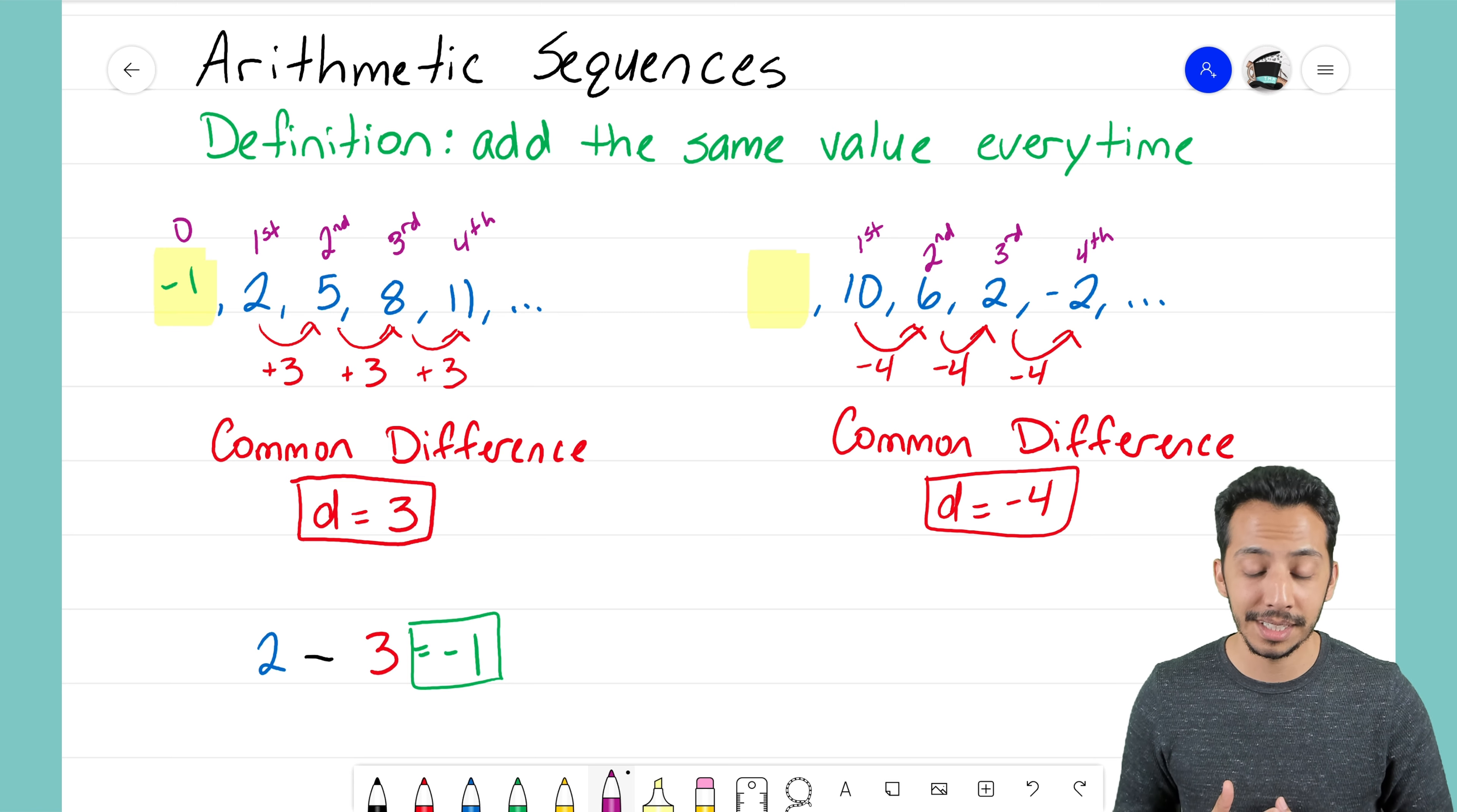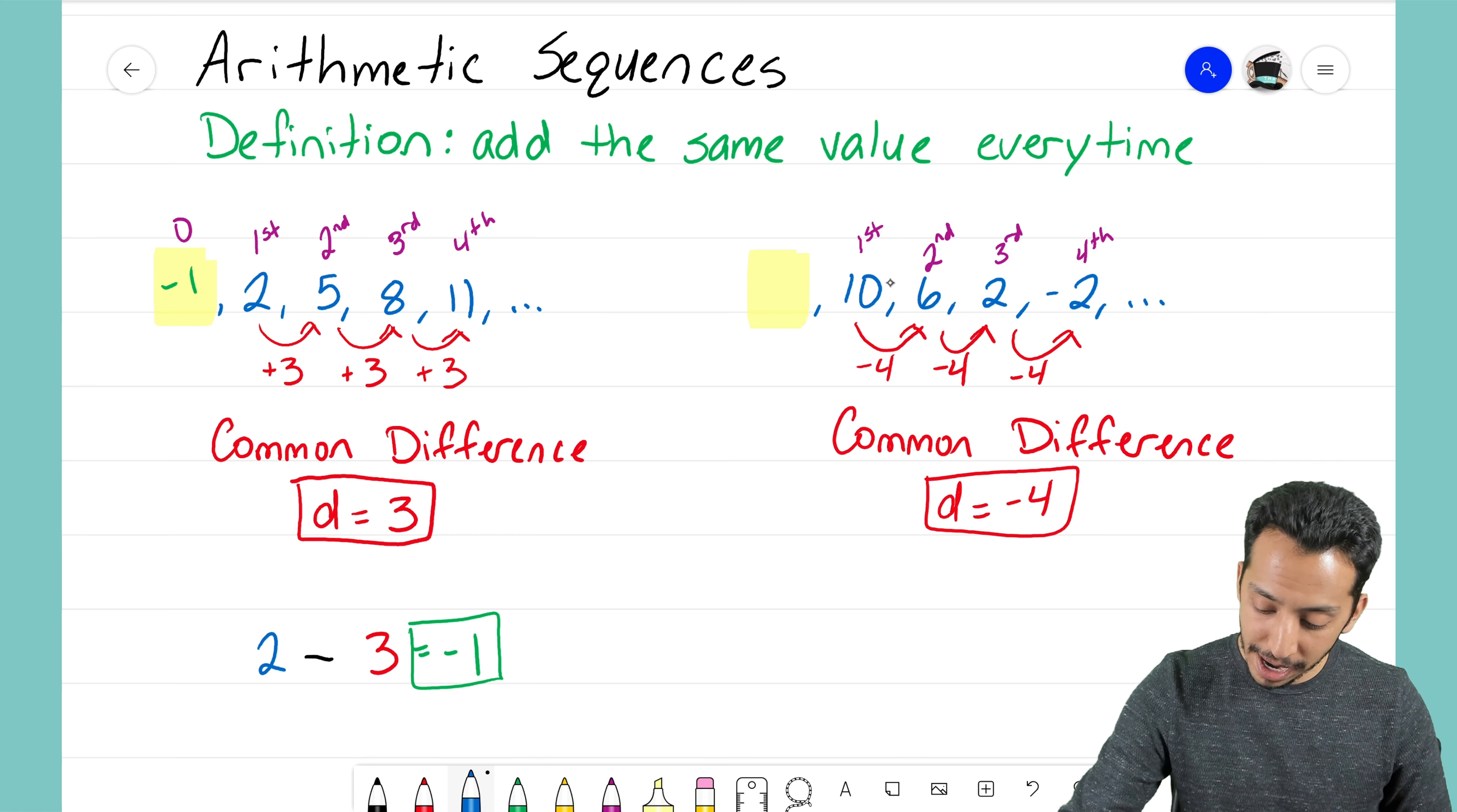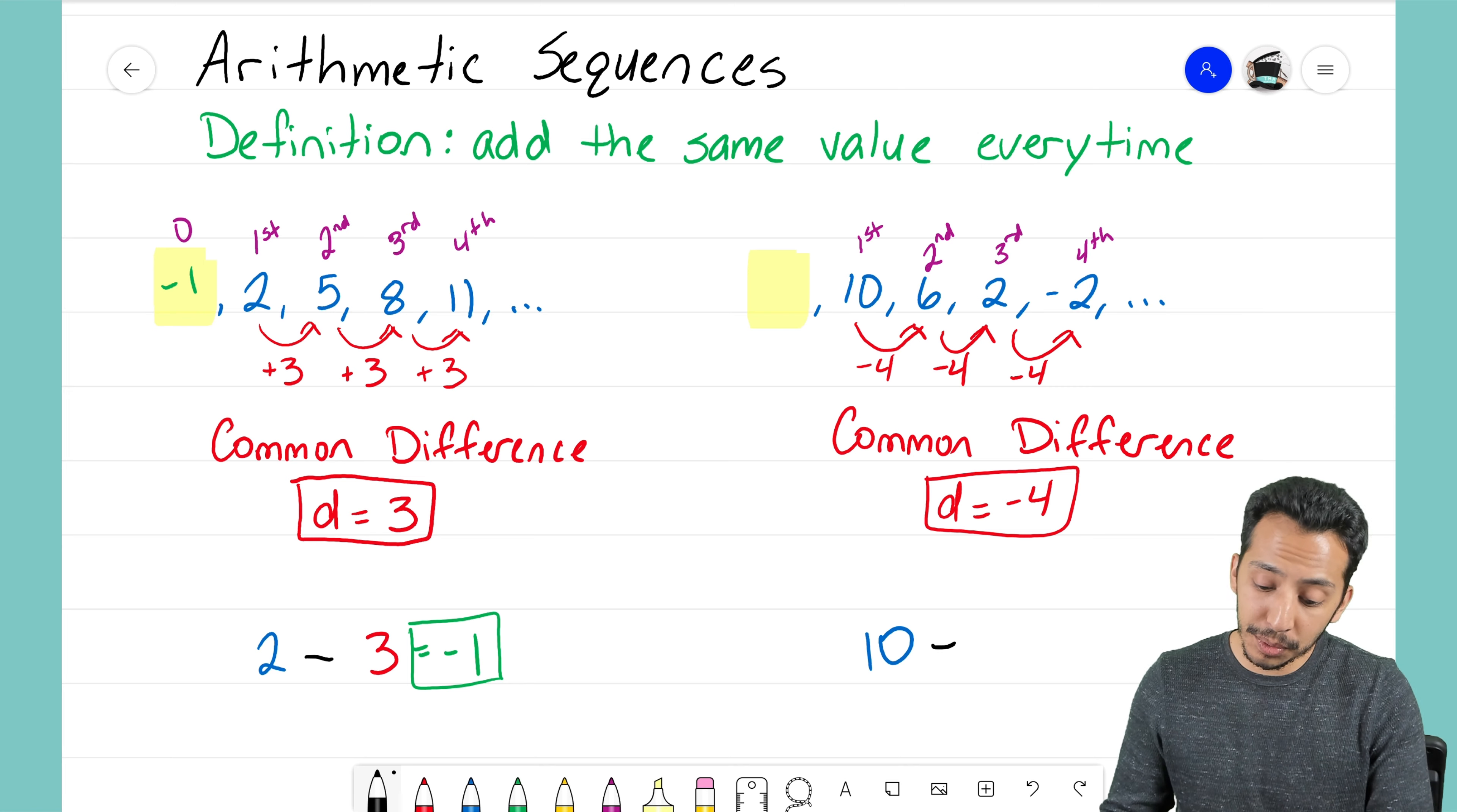Now for the sequence on the right, we're going to follow that same exact path. I'm going to start off with my first term here. My first term is a 10. I'm going to subtract my common difference.